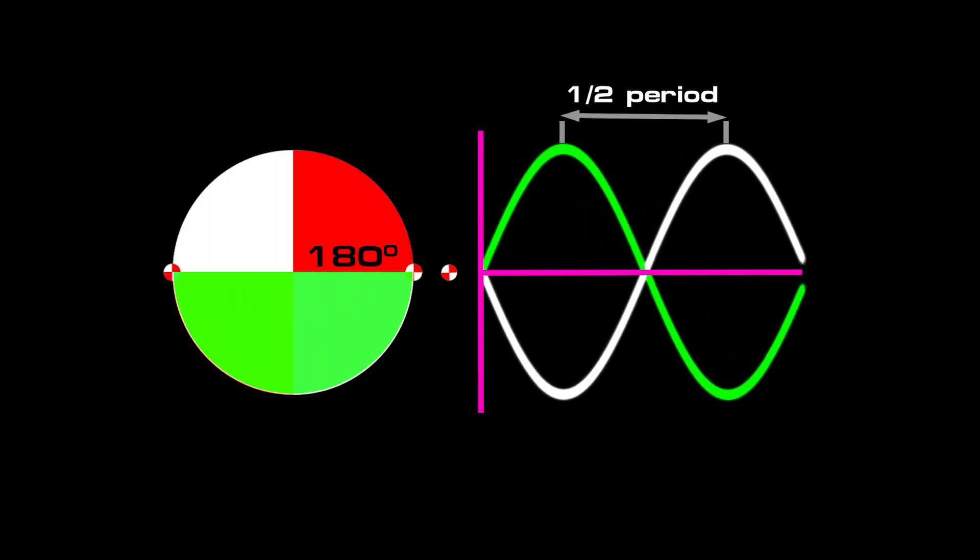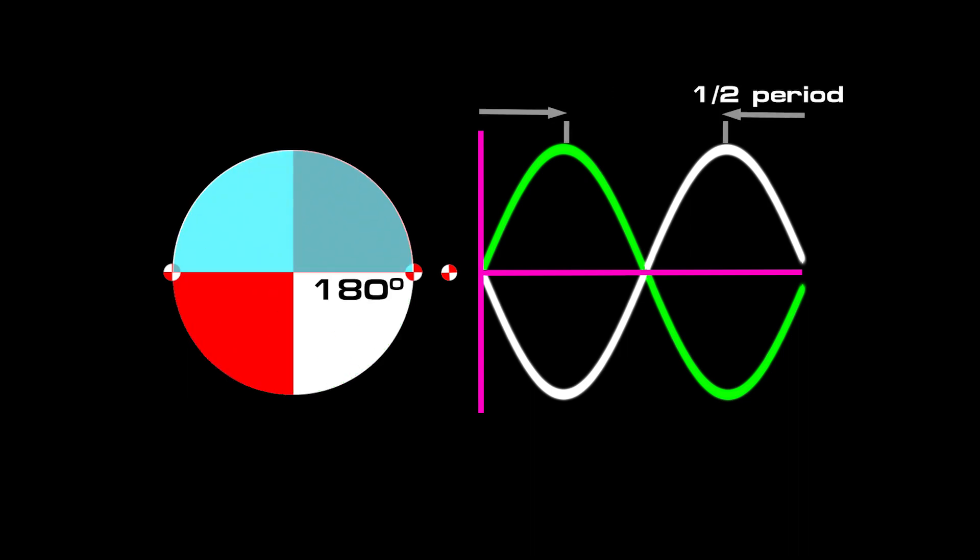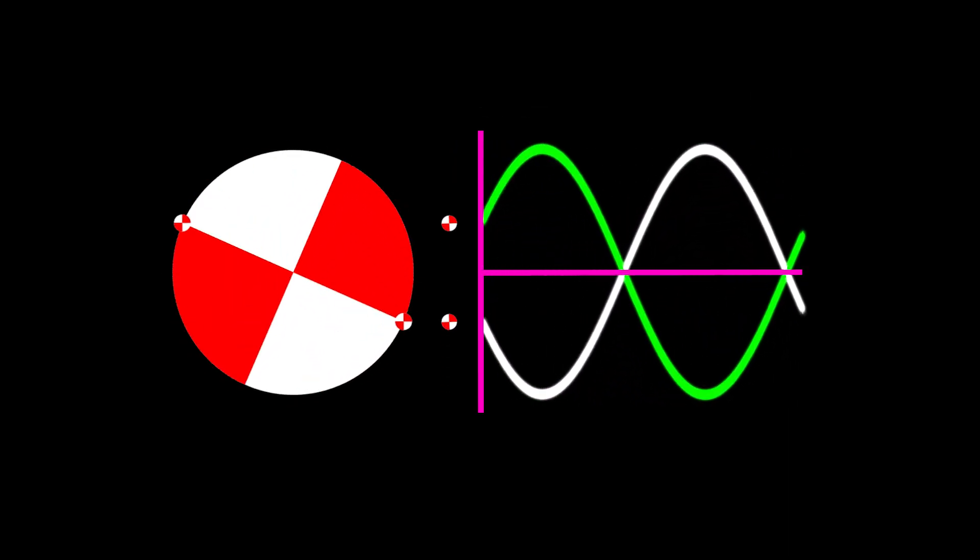Next, we apply a 180 degree phase lag which results in a corresponding half period time delay. This is equal to applying a 180 degree phase lead for a half period time shift. As you can see, the original wave is completely inverted.